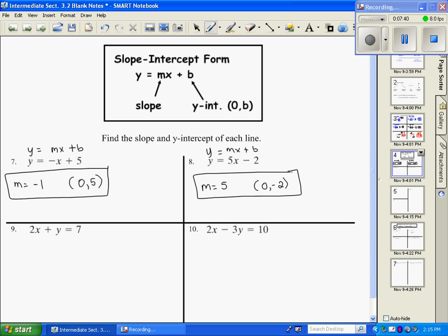Number 9, it's not solved for y. So the first thing I need to do is get y by itself. So I'm going to subtract 2x from both sides. So then I have y equals negative 2x plus 7. If I wrote my formula right underneath it, I have y equals mx plus b. It's easy to recognize that the m is negative 2. And your b is 7. So as a y intercept, as an ordered pair, it's 0, 7.